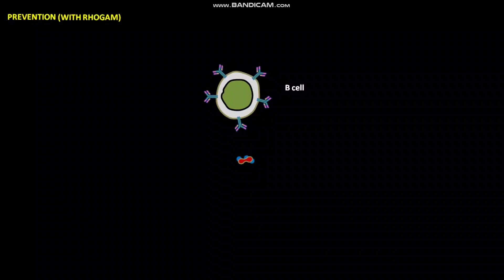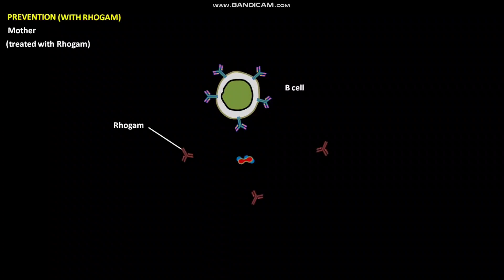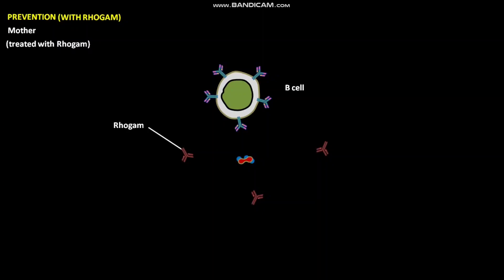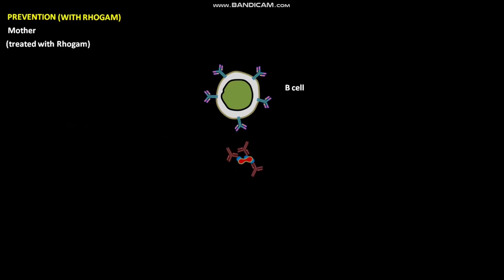To prevent erythroblastosis fetalis, the mother is treated with Rhogam within 24 to 48 hours after the first delivery. Rhogam are antibodies against the fetal Rh antigen. Rhogam binds to antigens expressed on any fetal RBCs that enter maternal circulation at the time of delivery, facilitating the clearance of fetal Rh+ RBCs before B cell activation. This blocks B cell activation and consequently blocks memory cell formation.